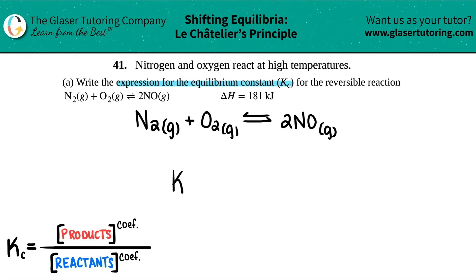So Kc equals products divided by reactants. Now they're looking specifically for Kc. So we use this notation of brackets. Brackets means they're molarity values, if we actually did some math. So I'm going to bracket.